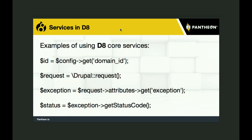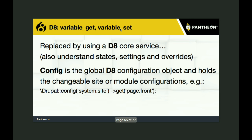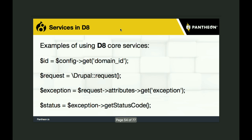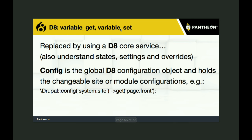Other examples of using Drupal core services: getting the request object, getting the exceptions off the request object, getting the status code off the exception. Everything you used to use variable_get and variable_set for is all changed to get from config and write to config. To write a setting, you must instantiate a config factory, get the editable version of the setting you'd like to change, then change it and save it. If you don't do all those steps, your change will not happen correctly. You can also unset a variable using the clear method and then saving.